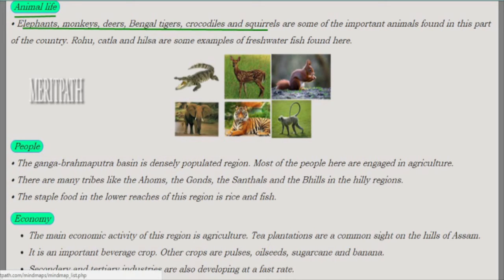Animal life in this region includes elephants, monkeys, deer, Bengal tigers, crocodiles, and squirrels. These are some of the important animals found in this region. Rohu, katla, and hilsa are some of the freshwater fish species found here.